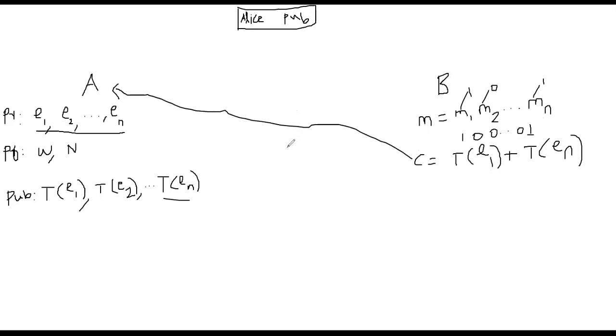C is sent to Alice. Of course, eavesdropper E will also know C because it's sent in clear channel. Eavesdropper also knows the public key because it's public, because it's publicly registered. So basically, this sequence is publicly registered here. So everybody knows this public sequence.